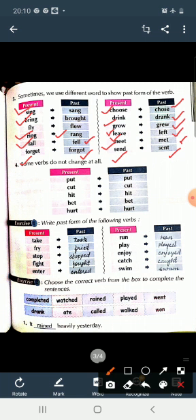Children, you have to learn these past forms of verbs. Some verbs do not change at all. कुछ verbs ऐसी भी होती हैं, जो बिलकुल भी change नहीं होती. वो present tense में भी वही होती हैं और past tense में भी same रहती हैं. Put, put. Cut, cut. Present में भी cut और past में भी cut. Hit, hit. Bet, bet. Hurt, hurt.